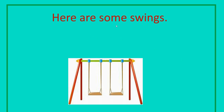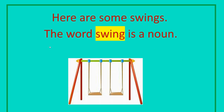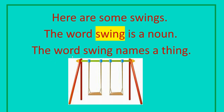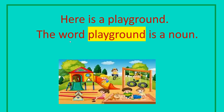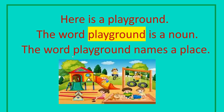Here are some swings. The word swing is a noun. The word swing names a thing. Here is a playground. The word playground is a noun. The word playground names a place.